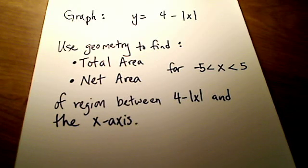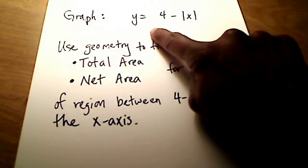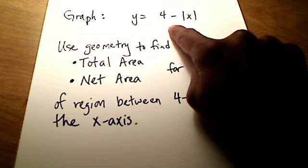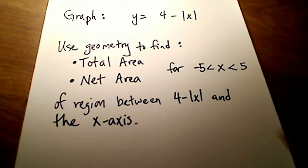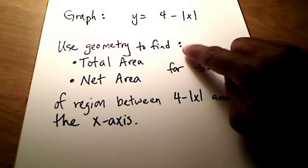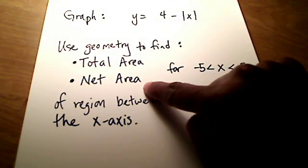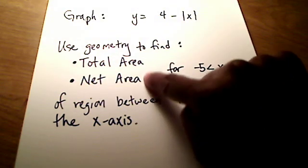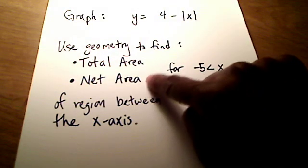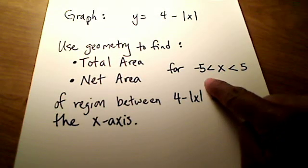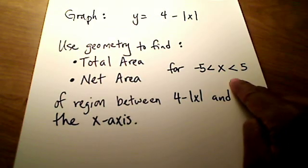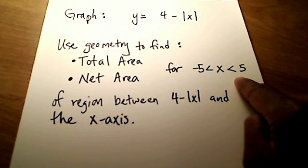In this problem, we are going to graph this equation: y equals 4 minus the absolute value of x. Then we're going to use geometry to find the total area and the net area — two different things — within this domain between negative 5 and positive 5.